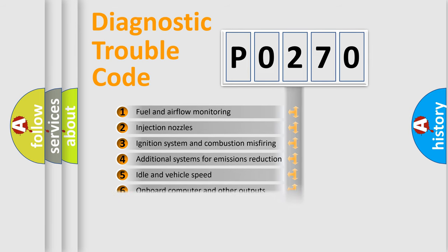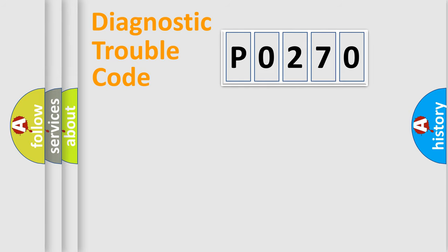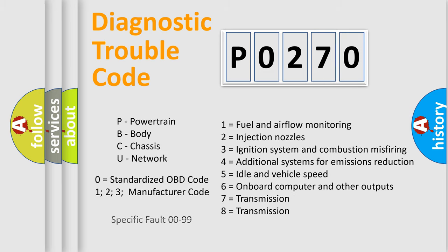The distribution shown is valid only for the standardized DTC code. Only the last two characters define the specific fault of the group. Let's not forget that such a division is valid only if the second character code is expressed by the number zero.